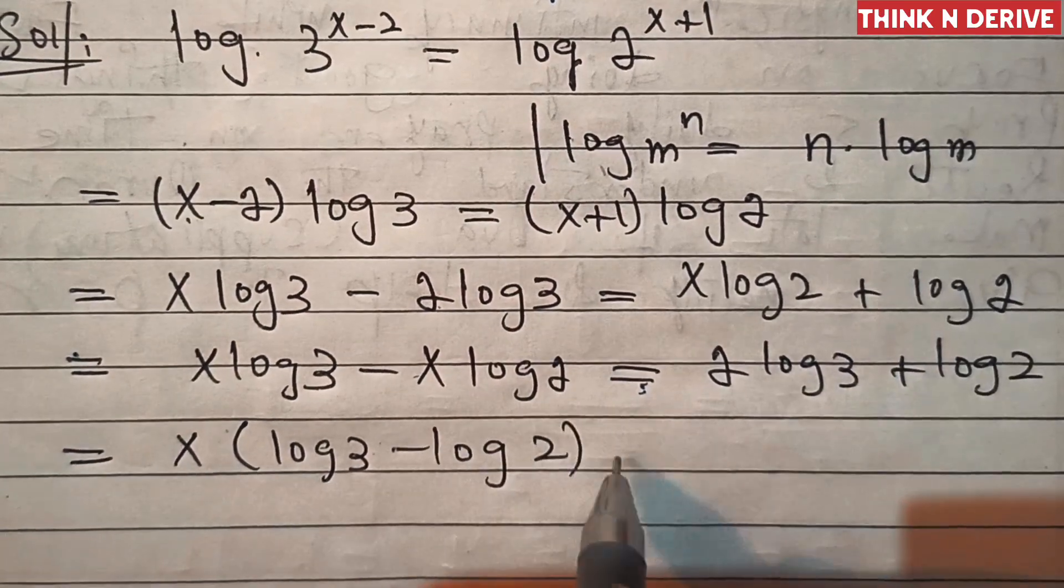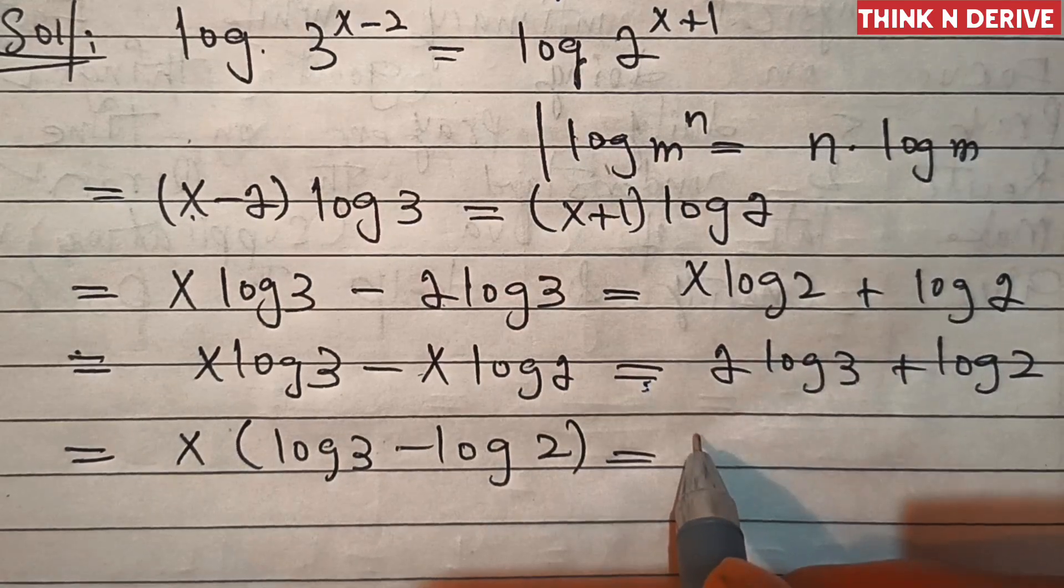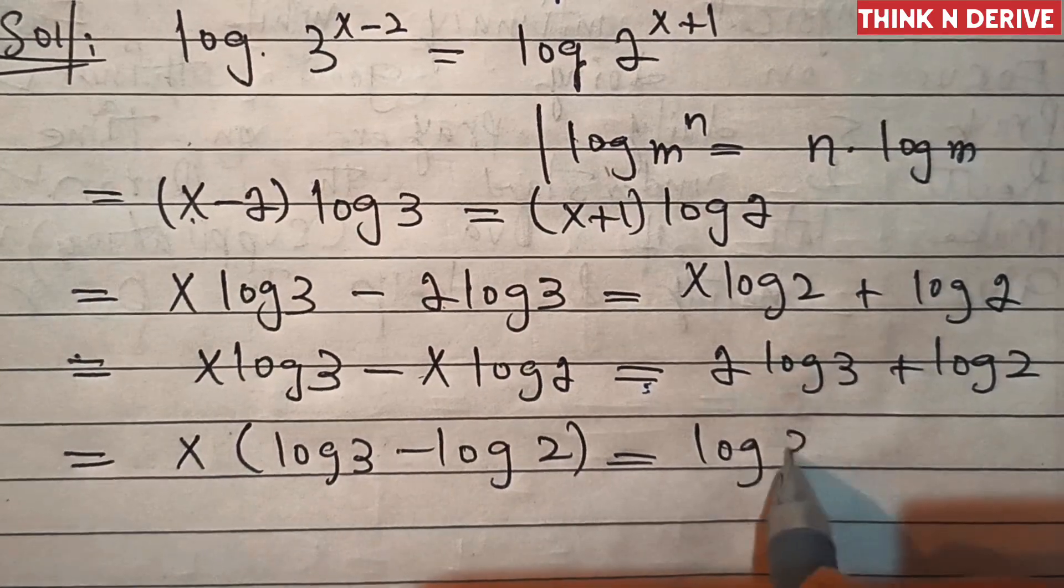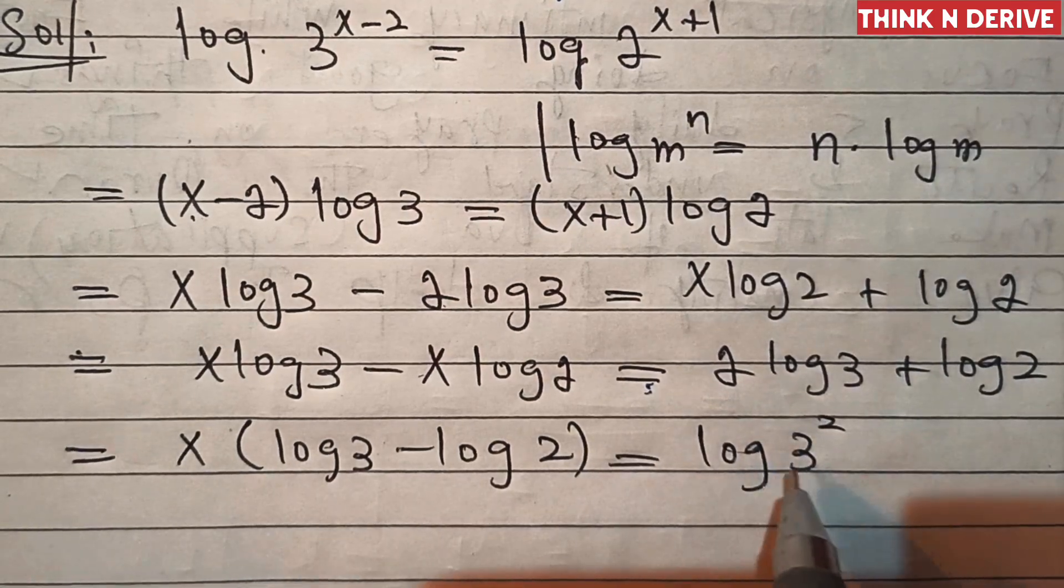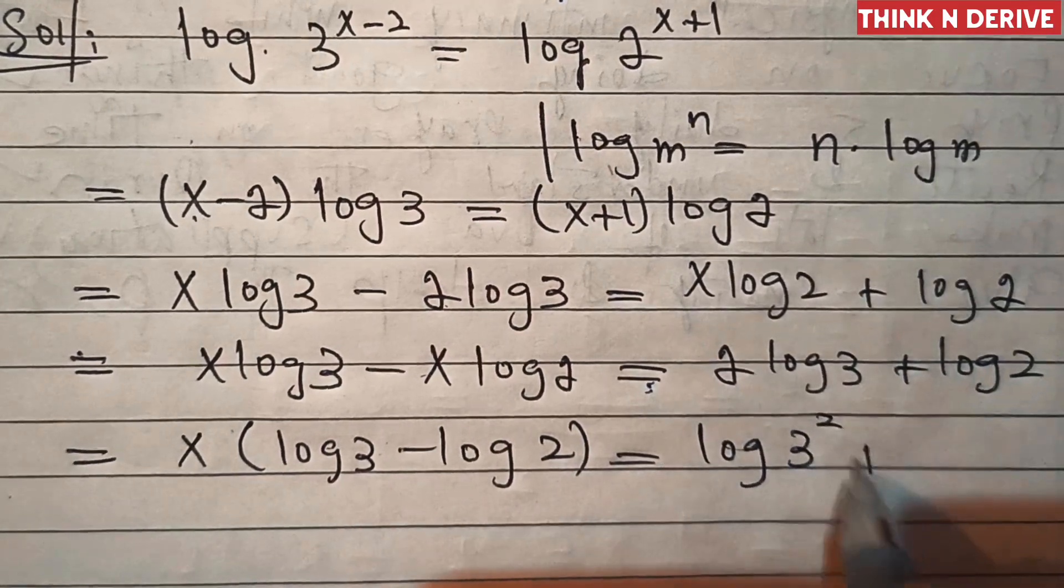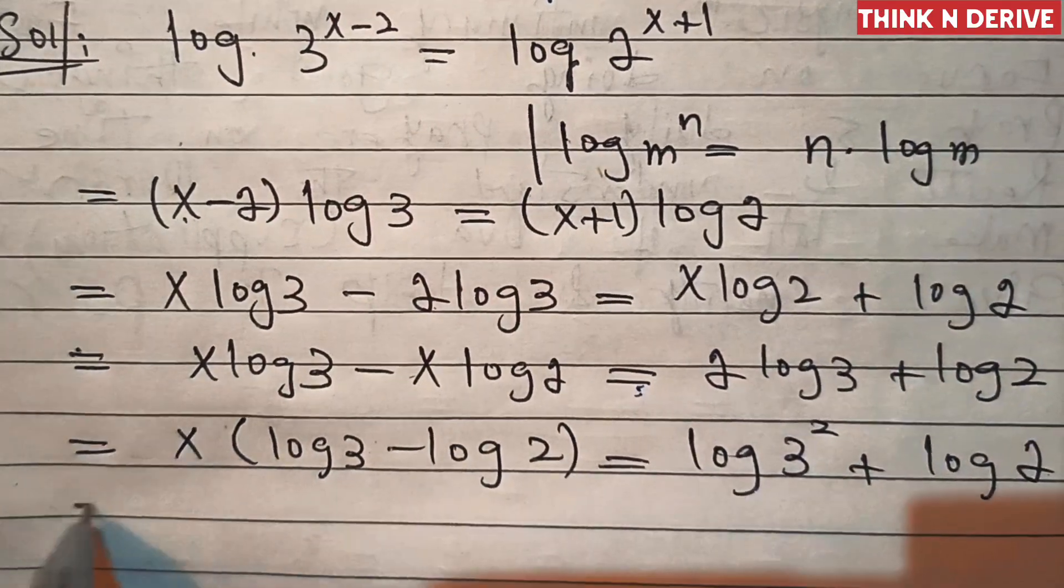log of 3 square, because m log n can be written as log of m power n. This is plus log of 2.